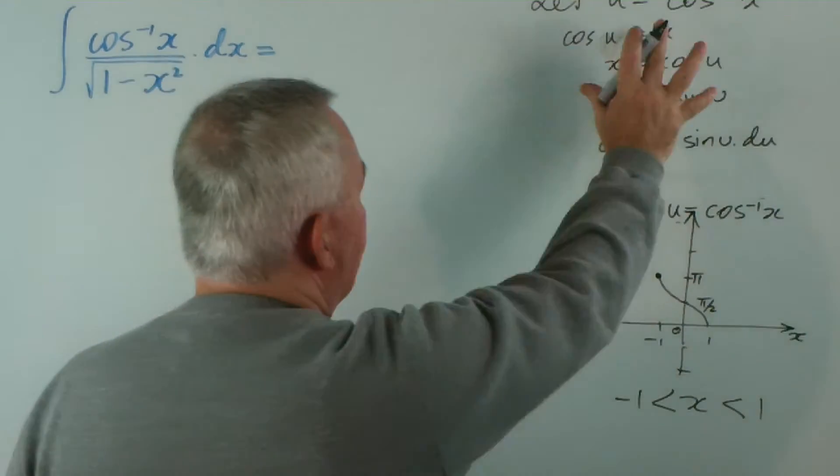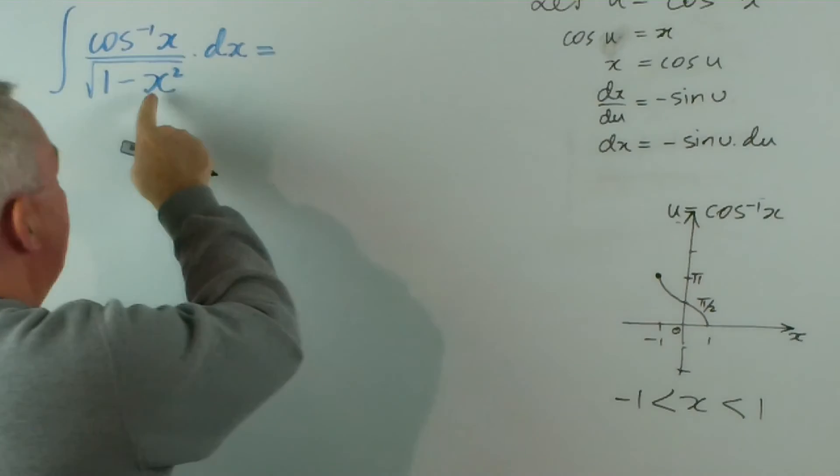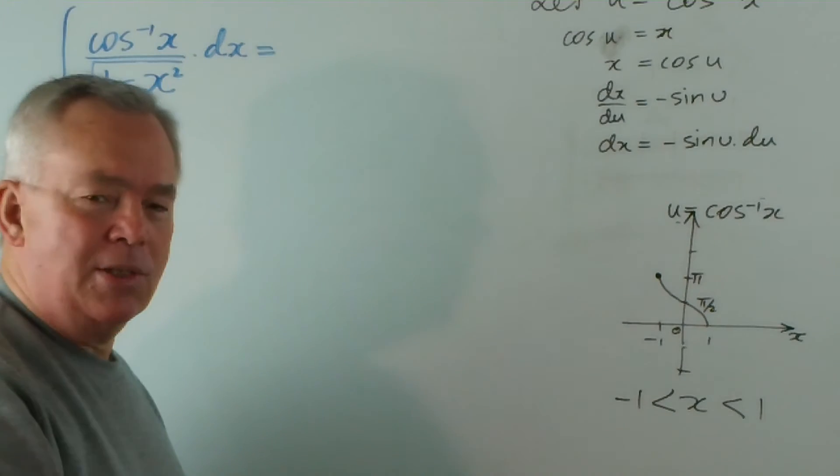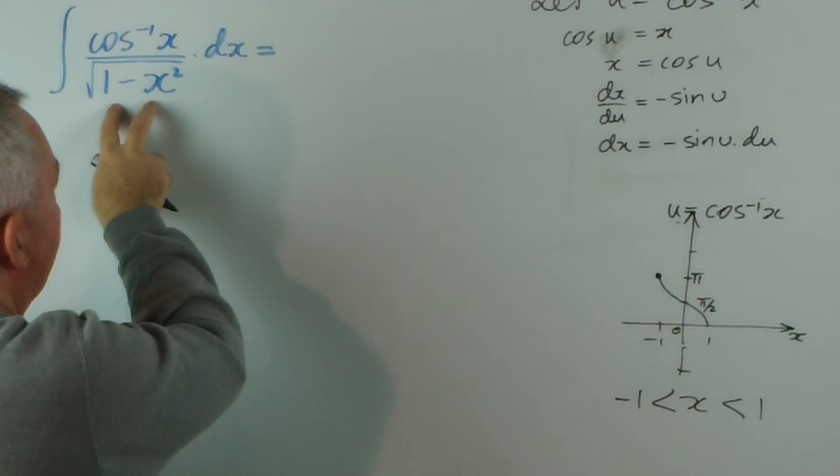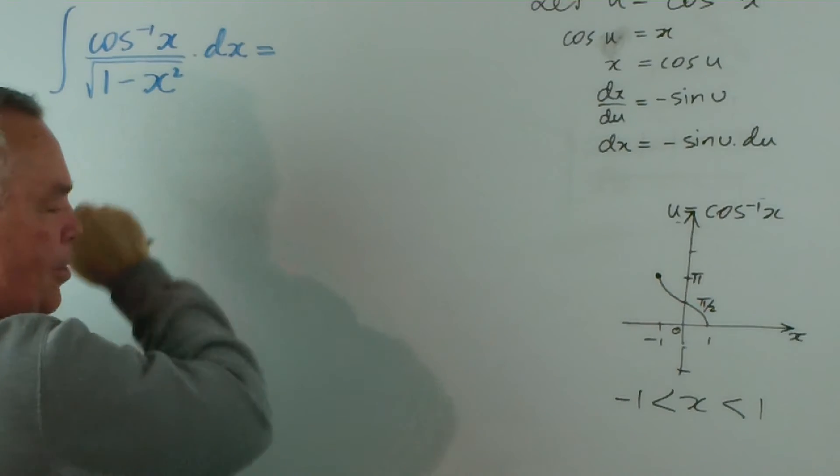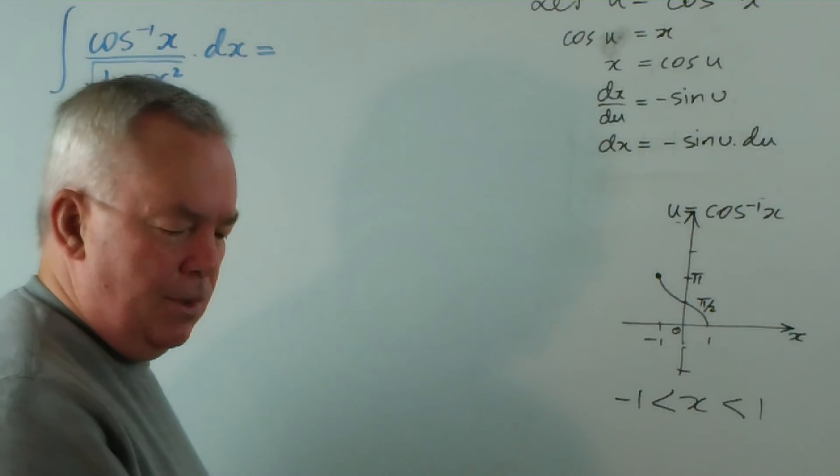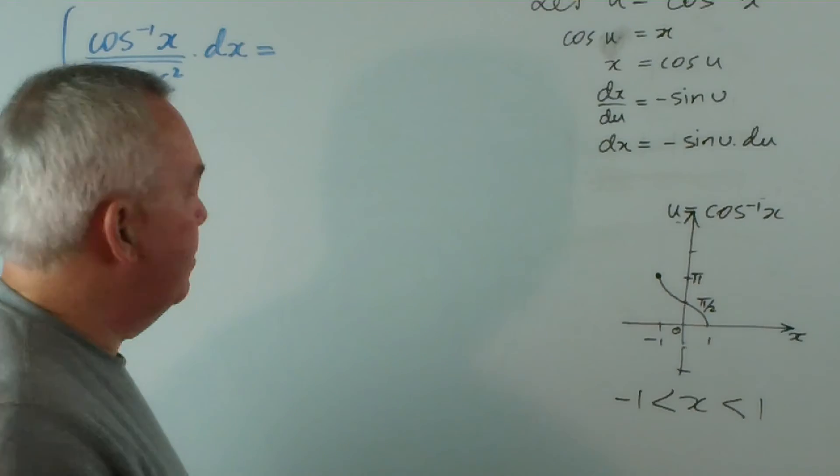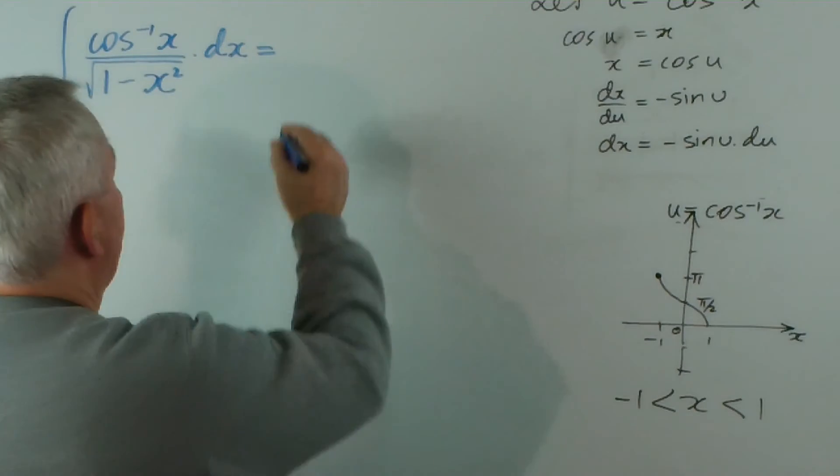And that will make a good substitution. And if we're substituting x equals cos u, you can see that is quite a satisfactory substitution in here, because we're going to get 1 minus cos squared u, which is, using that identity sine squared u plus cos squared u is 1. So let's have a look.